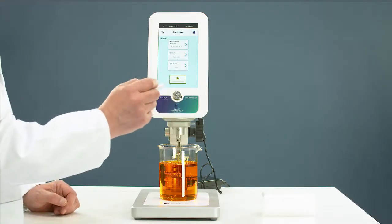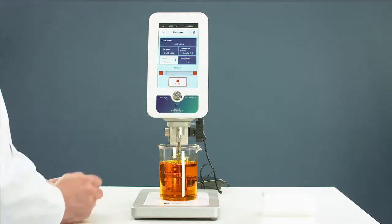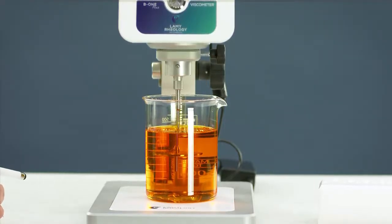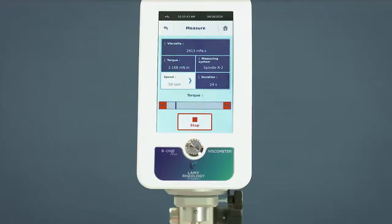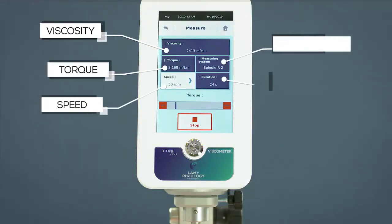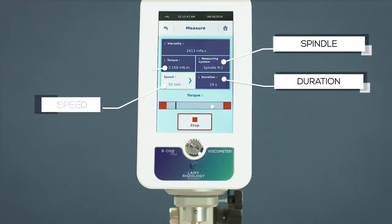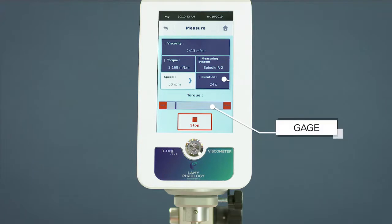Start your measurement. While measuring, the device shows you all information such as viscosity, torque, speed, spindle, and duration. A gauge allows you to see if the torque is not too close to the lowest or highest limit of the device.